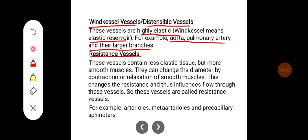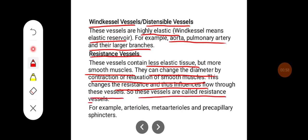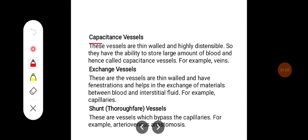Resistance vessels contain less elastic tissue but more smooth muscle. They can change diameter by contraction or relaxation of the smooth muscles, which changes resistance and thus influences flow through these vessels. They are therefore called resistance vessels — for example, arterioles, meta-arterioles, and pre-capillary sphincters.